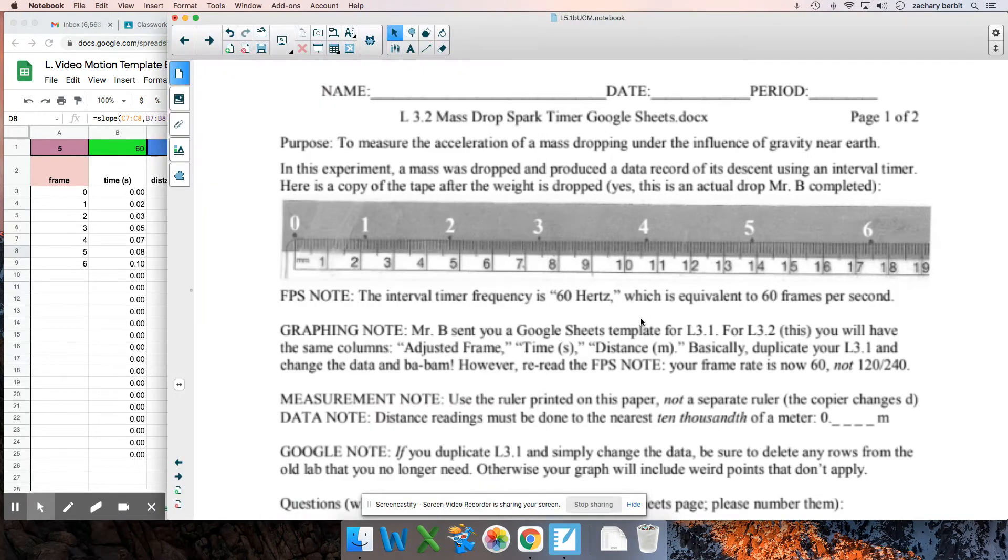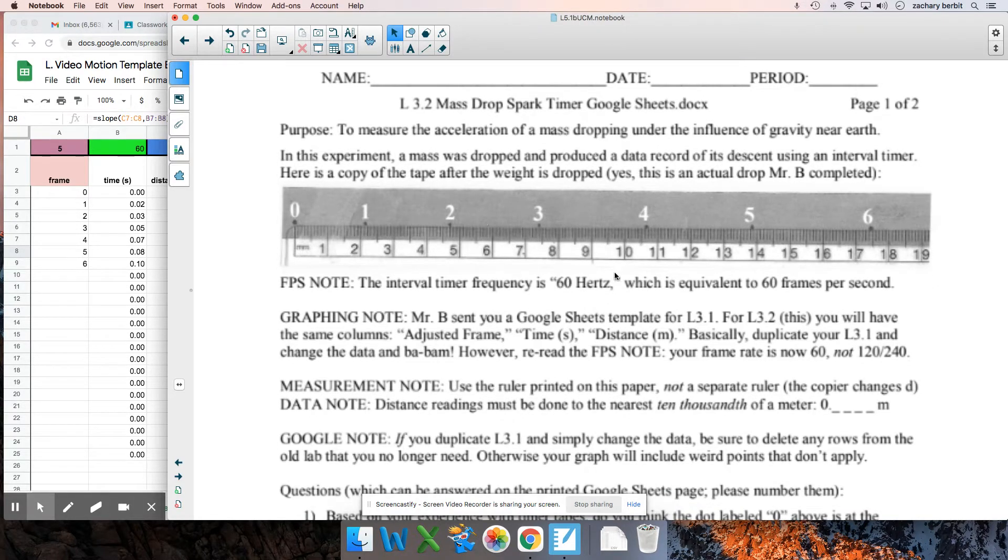All right, now we're looking at lab 3.2, the mass drop spark timer. Okay, so there was a little bit of trouble with this on the quizzes, so I wanted to revisit the process. Obviously, COVID has kind of messed up the way we're doing things, but basically you would have this mass over at the edge of a table. You would hold it in your hand right here. The ground is down here. And you have some distance here.